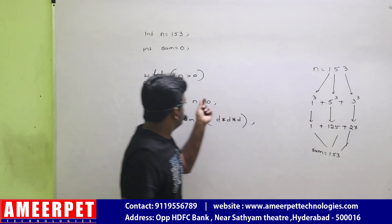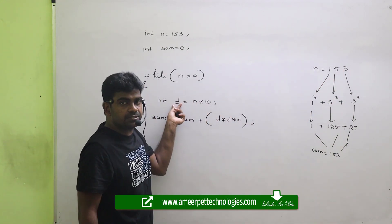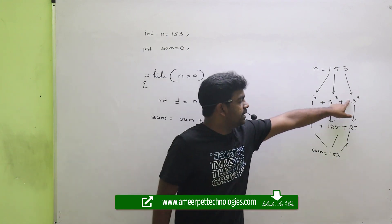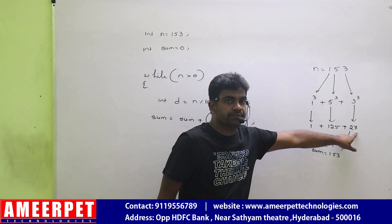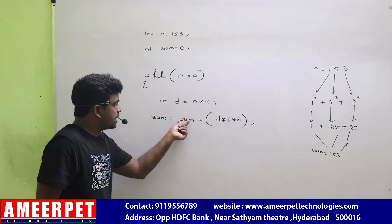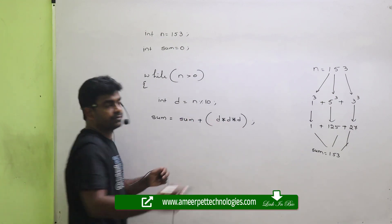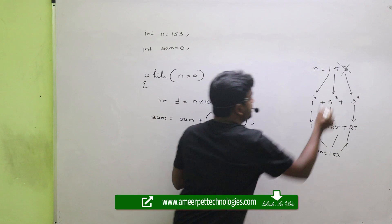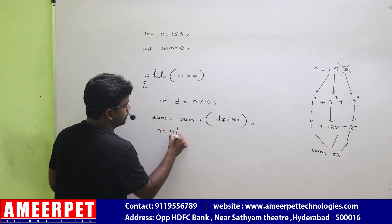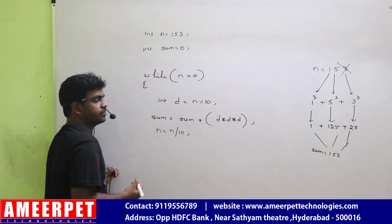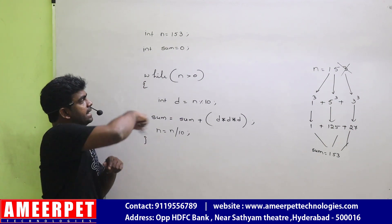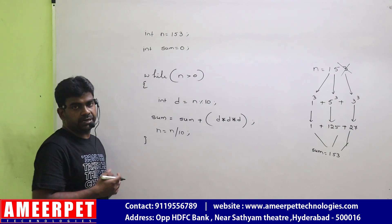First you will get the digit as 3. So d contains 3. So 3 into 3 into 3 — that 3 cubed — we are finding 27, and that you are adding to the sum. After working with that digit, just remove that digit. How to remove it? n equals n divided by 10. It will remove the last digit. Then again the loop will repeat.